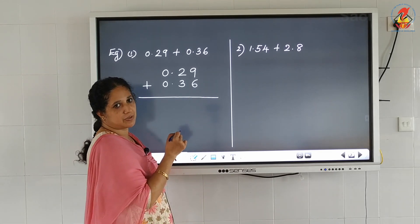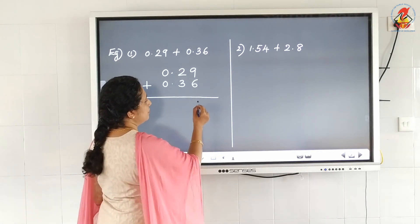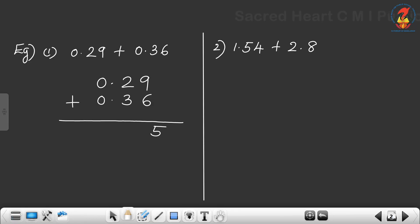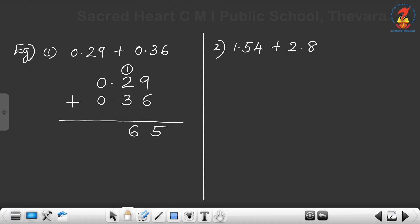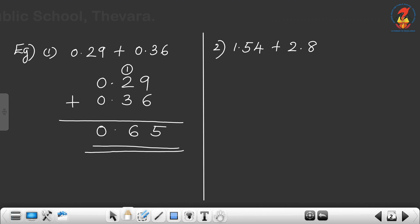9 plus 6 — what is 9 plus 6? 15, carry over 1. Then 3 plus 2 is 5, plus 1 carry is 6. Next comes the decimal point — put the decimal point. Then the whole number part: 0 plus 0 is 0. Therefore the answer is 0.65.